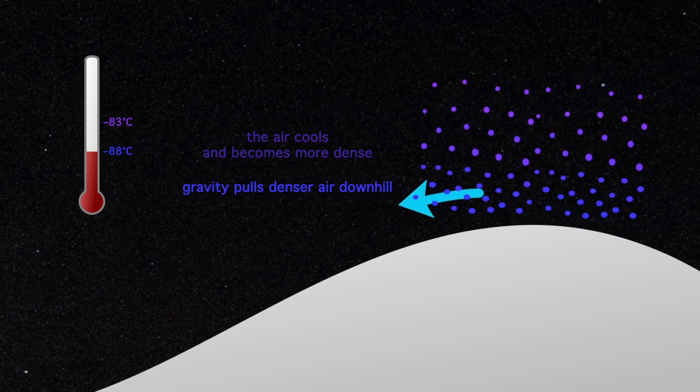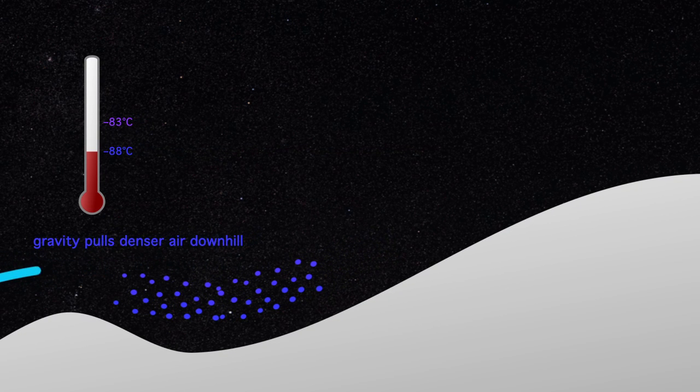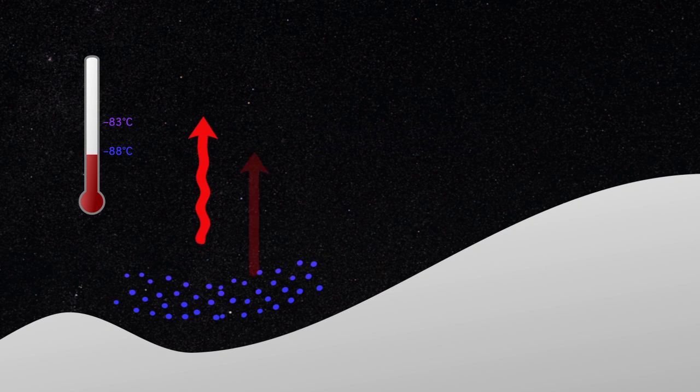This lower layer that's getting very cold under the clear sky conditions is denser and it starts to slide down this huge dome of Antarctica.